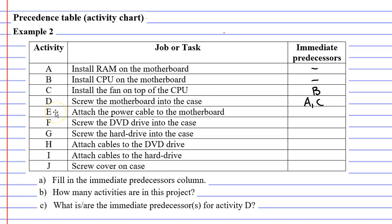Next we need to complete activity E — we need to attach the power cable to the motherboard. We can't do that until we've screwed the motherboard into the case. So the immediate predecessor of activity E is activity D.